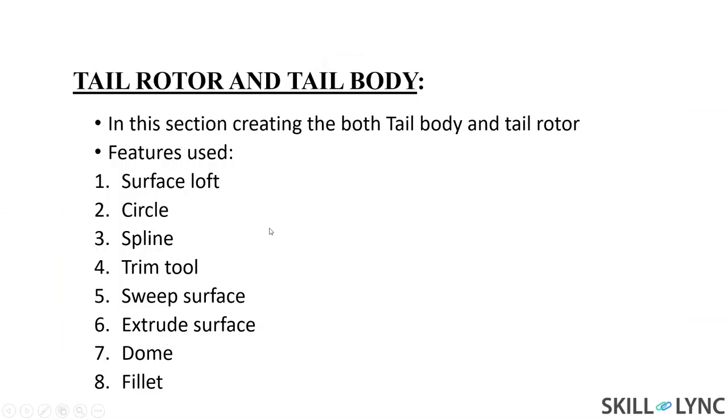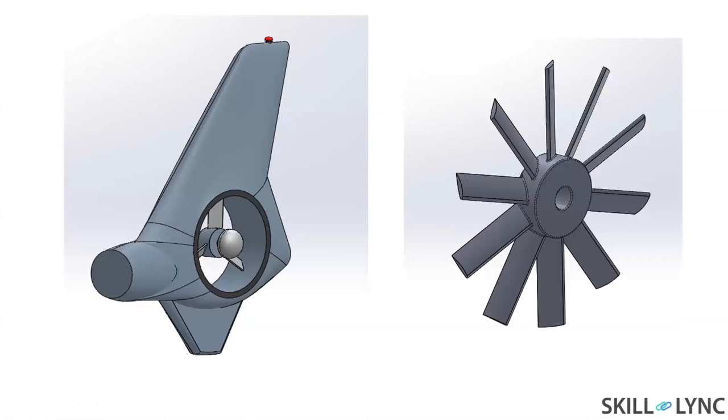Next one is tail rotor and tail body. I have used the features like circles, spline, surface loft, web surface, boss extrude, and dome. These are the main features I have used.